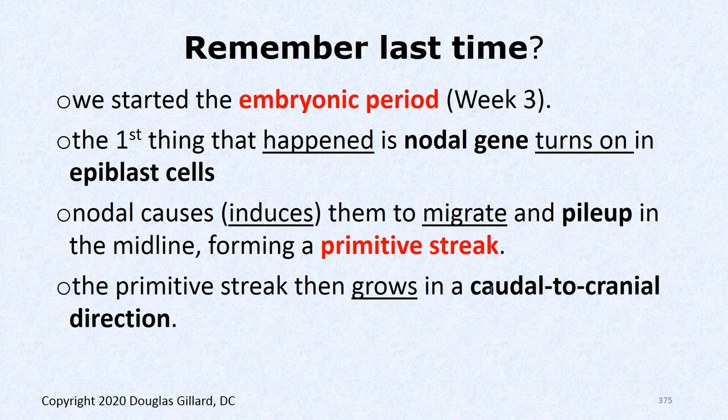At the start of week three, at the start of the embryonic period, we had a bilaminar disc — an epiblast and hypoblast, two layers. Now we're going to convert that into a three-layer disc, but the cells of those three layers are also being changed into the germ layers. They're all stem cell-like, especially that epiblast layer. We're making the three germ layers — touch any part of your body right now, it was derived from one of these three layers.